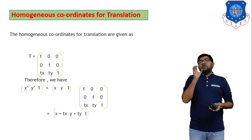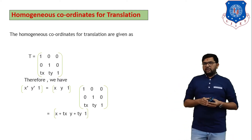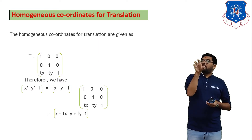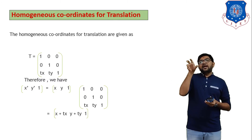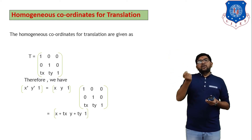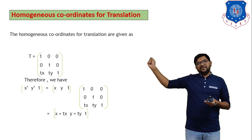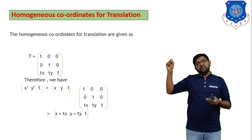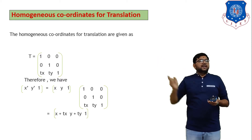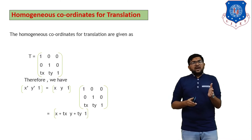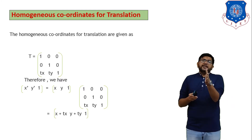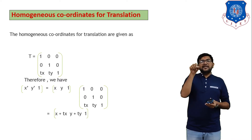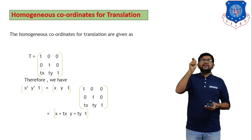Now, homogeneous coordinate for translation. Translation means moving any object from one place to another. We already derived the equation: new X equals old X plus TX, and new Y equals old Y plus TY. Now we have to convert this translation equation into a 3×3 matrix form. The homogeneous translation matrix T is equal to [1, 0, 0 / 0, 1, 0 / TX, TY, 1].